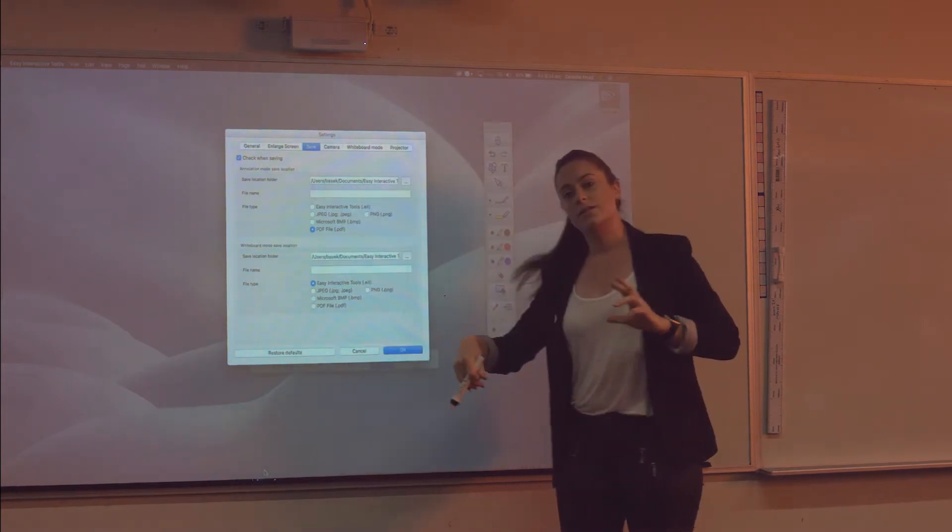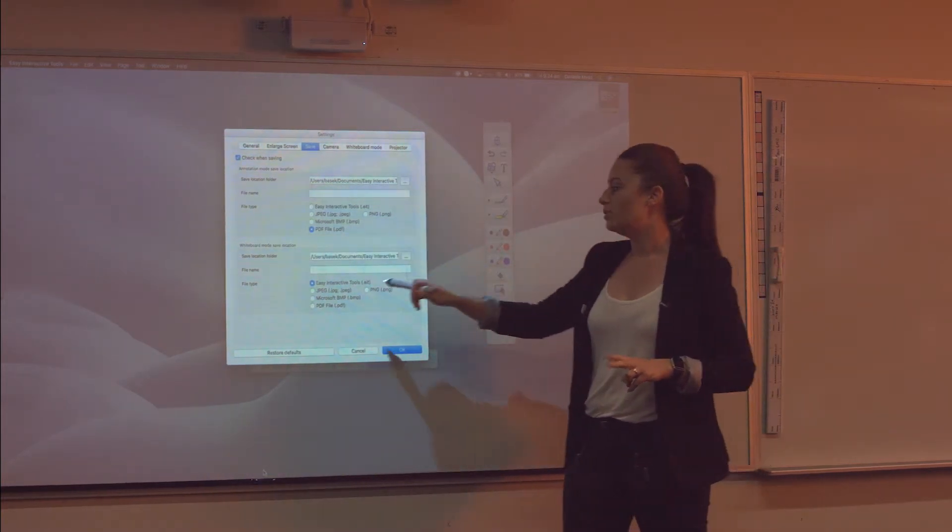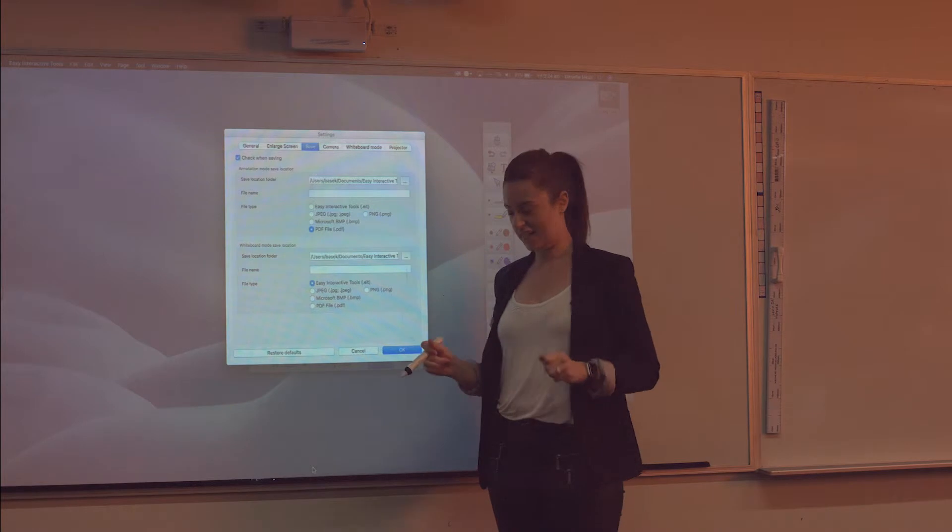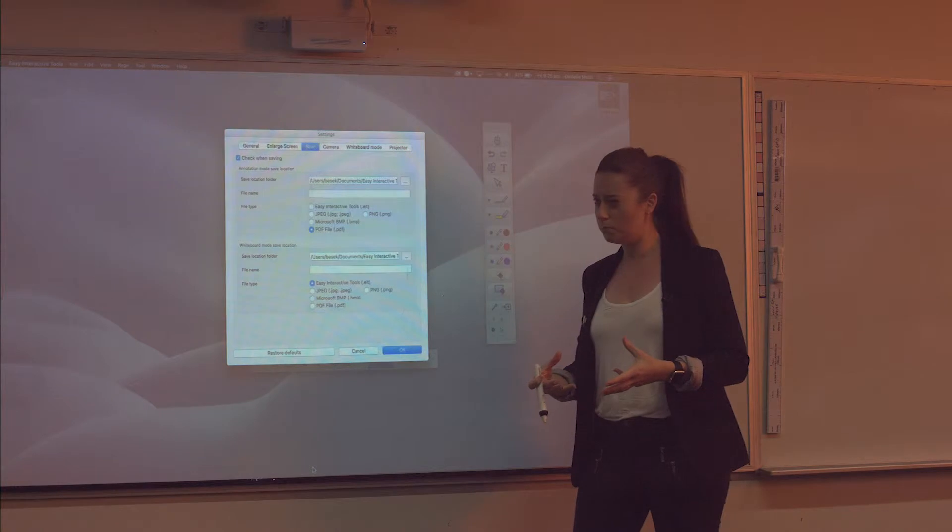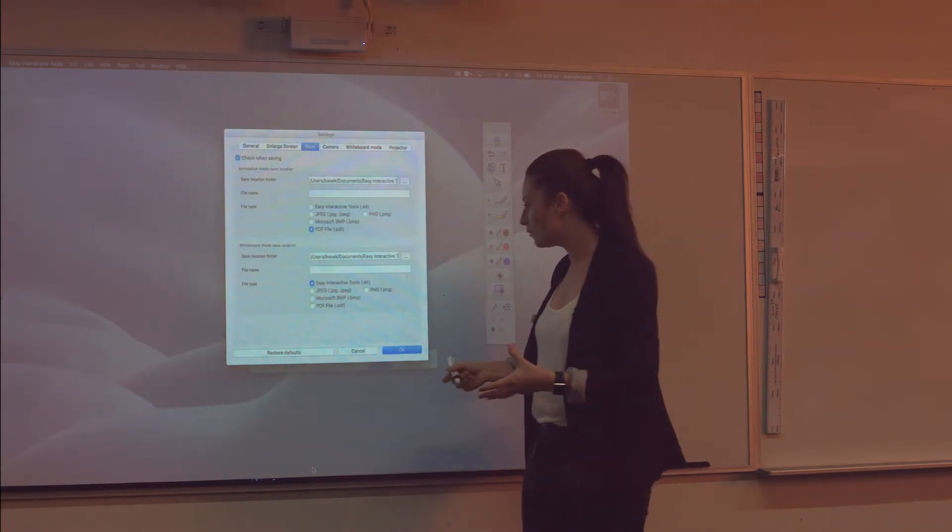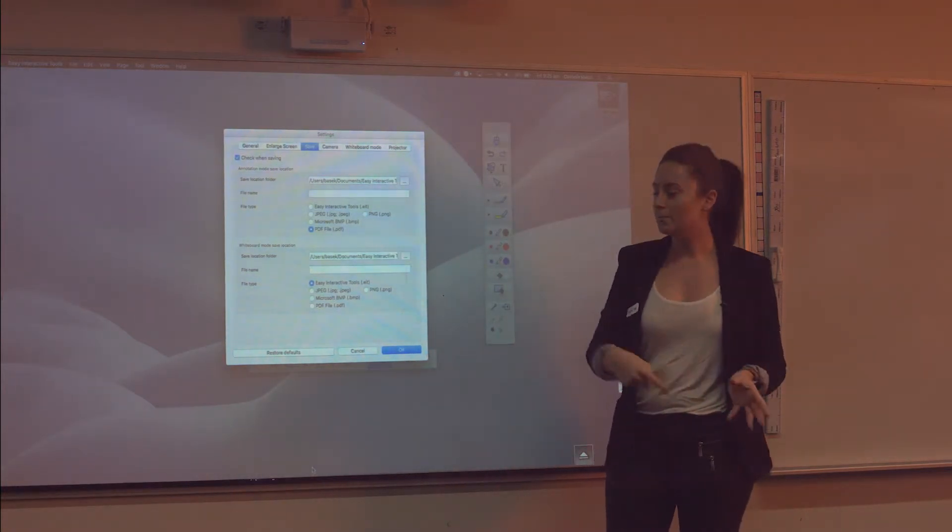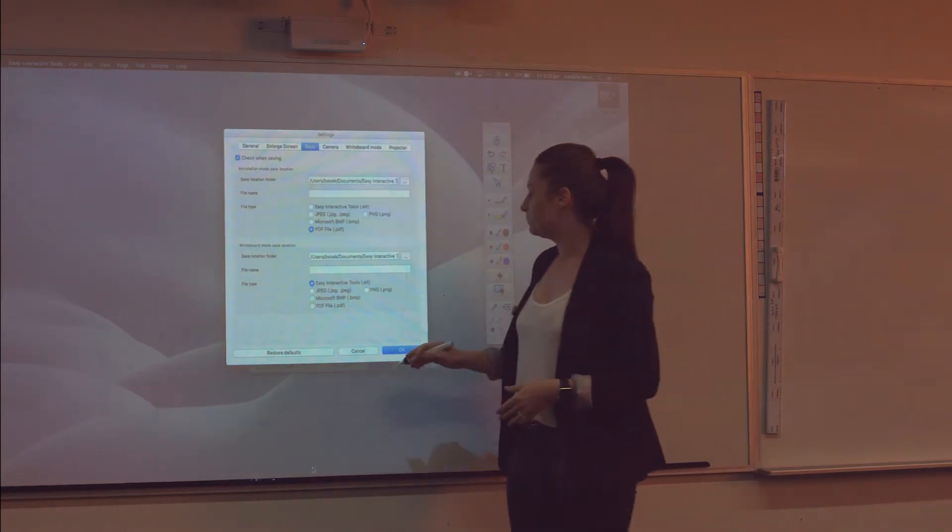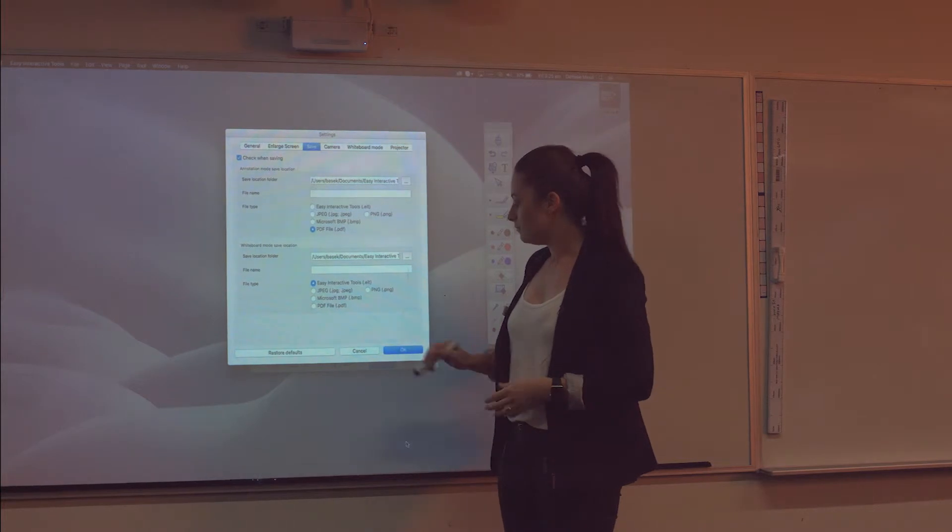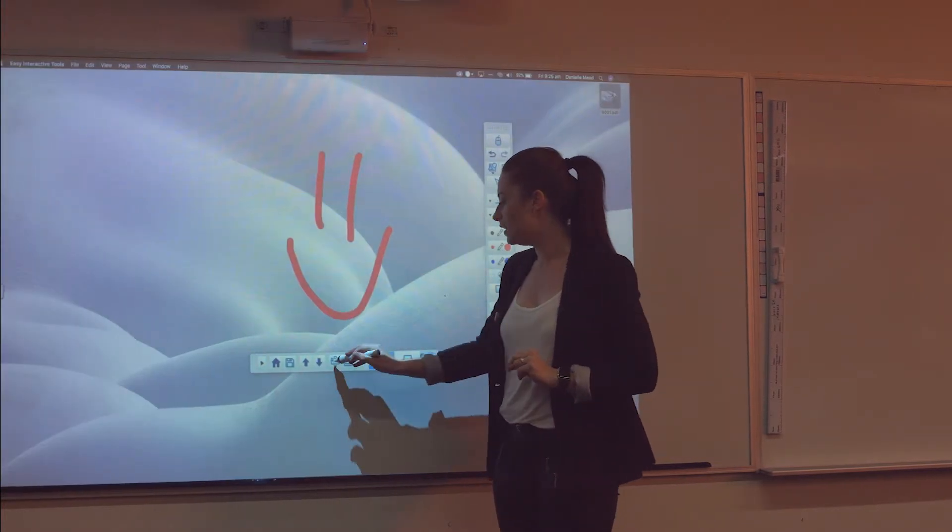Secondly is your whiteboard mode. So this is the second mode I was talking about. This one you have to leave it as EIT. That's because it's its own file type. Just like smart, smart notebook, whatever it's called, smart software. Has its own file type. Epson has its own file type and it only opens Epson tools. Same principle there. There are only two reasons you'll need to go into settings.